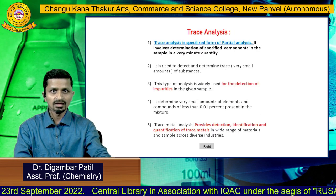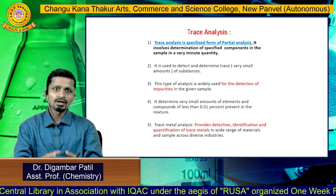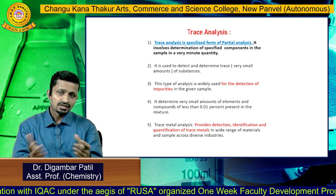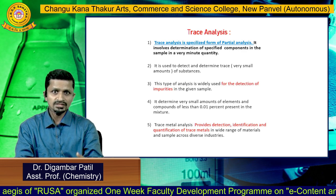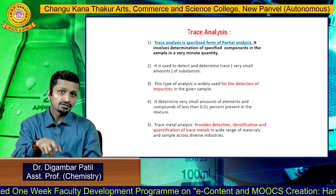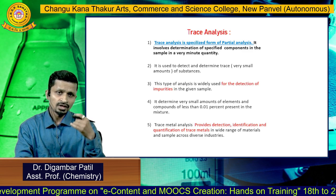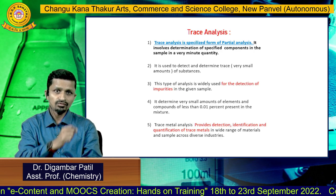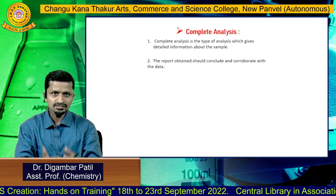The next type is trace analysis. This involves the determination of very small amounts of substances present in the sample. Trace analysis is generally related to the determination of different kinds of impurities and is very important in industrial and pharmaceutical areas where impurities must be found at very small percentages.